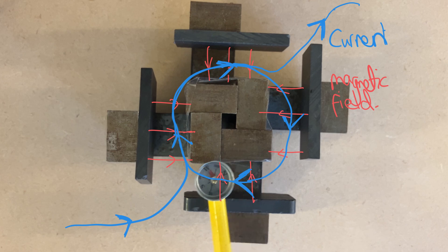The current changes direction many times per second which means the force changes from up to down many times a second, which causes it to vibrate and produce a sound wave.